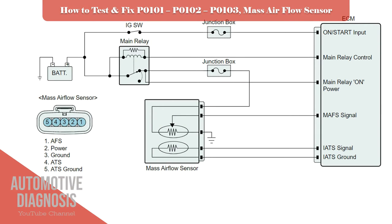As soon as you turn the ignition on, you have the power supply on the sensor, which is battery voltage. And when the engine is running, the sensor keeps sending the signal to the ECM to show the air mass entering the engine. Signal voltage will change according to the engine RPM and load, so we must check the voltage change to ensure that the sensor is working properly.